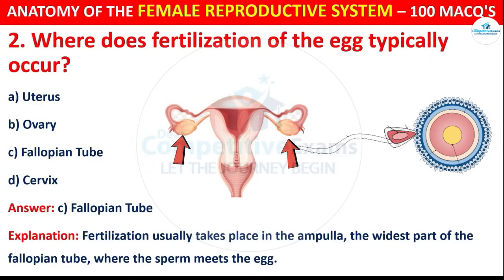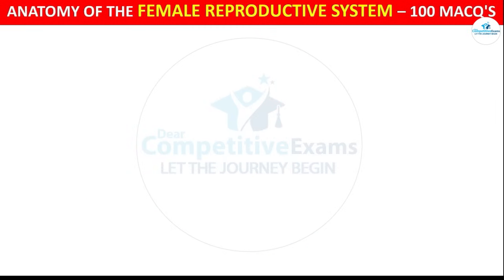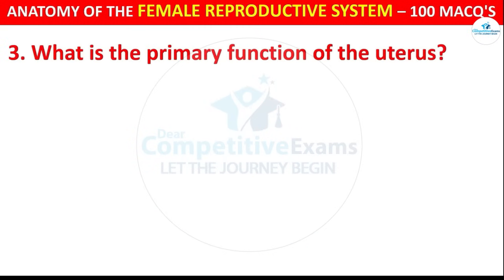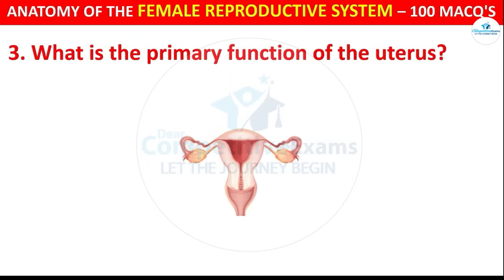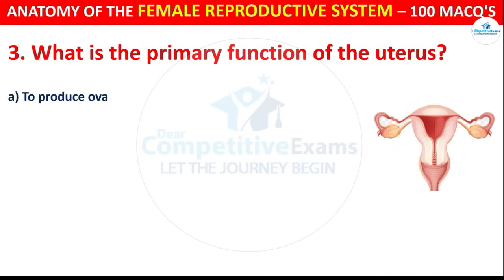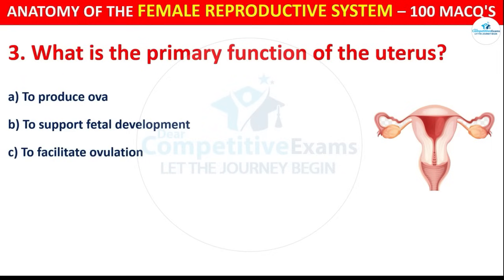Question number 3: What is the primary function of the uterus? Options are: To produce ova, To support fetal development, To facilitate ovulation, or To secrete hormones.